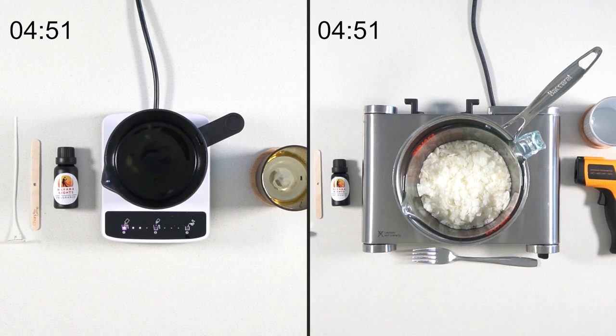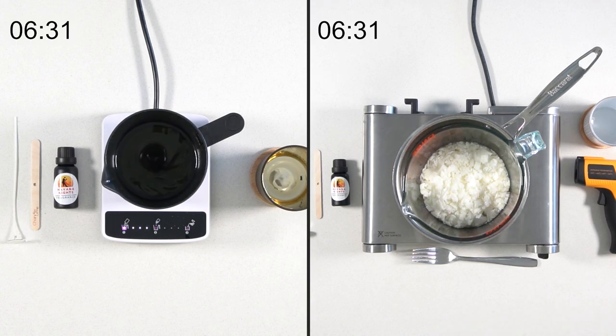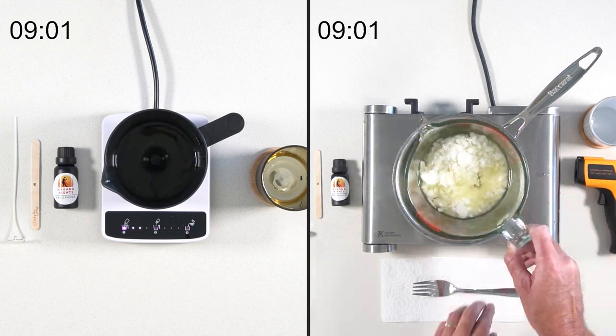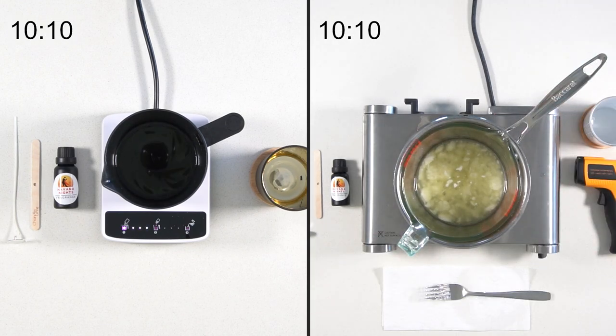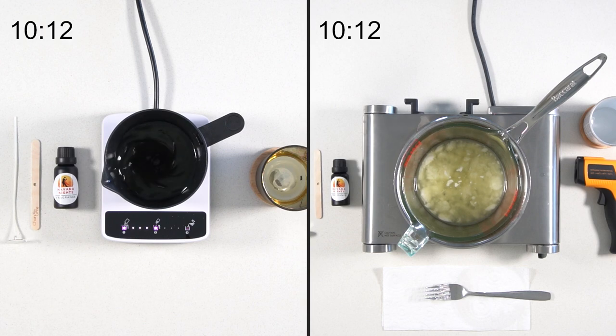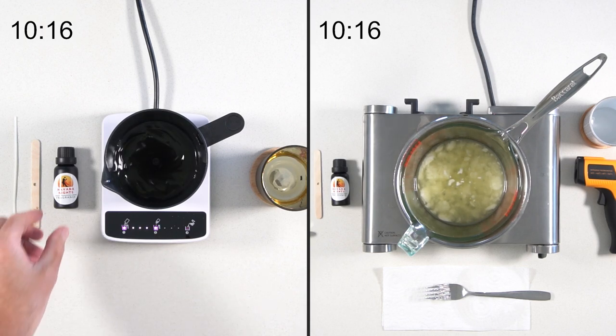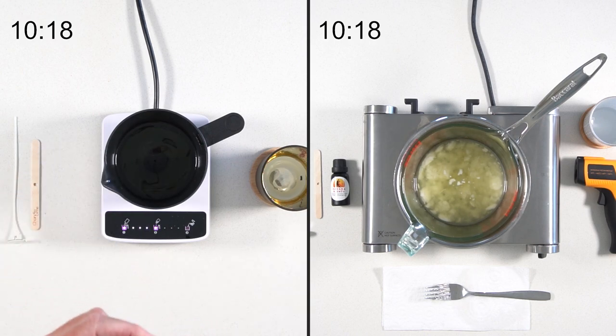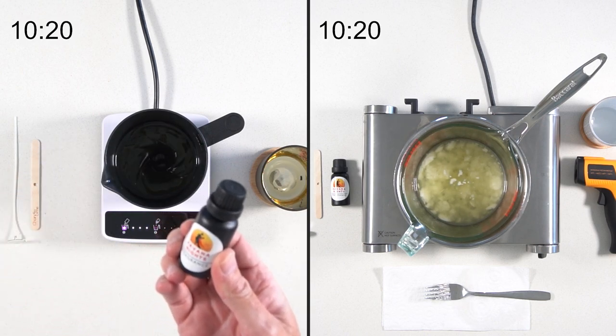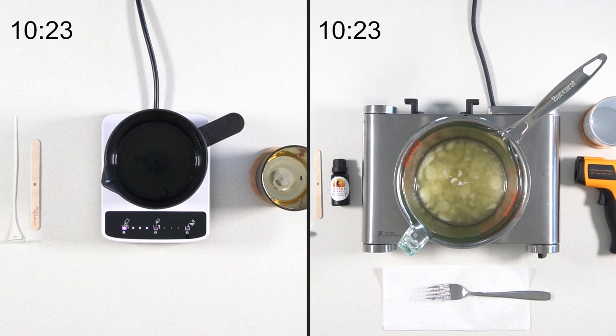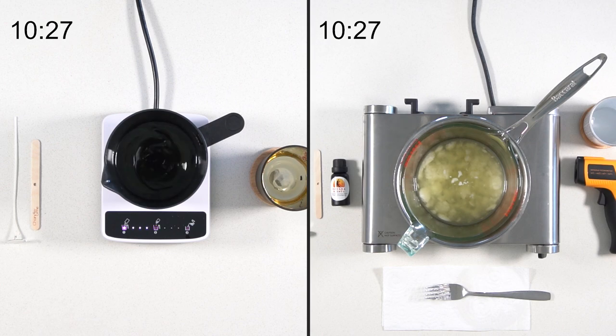The important thing to note is the candle maker has all the temperatures preset, so we're going to melt this wax to around 75 degrees Celsius, and same in the double boiler method. The difference is the candle maker is just going to automatically melt to that temperature, which you can see after a time elapsed of around 10 and a half minutes. It's done. So this is the perfect temperature now for adding your fragrance.